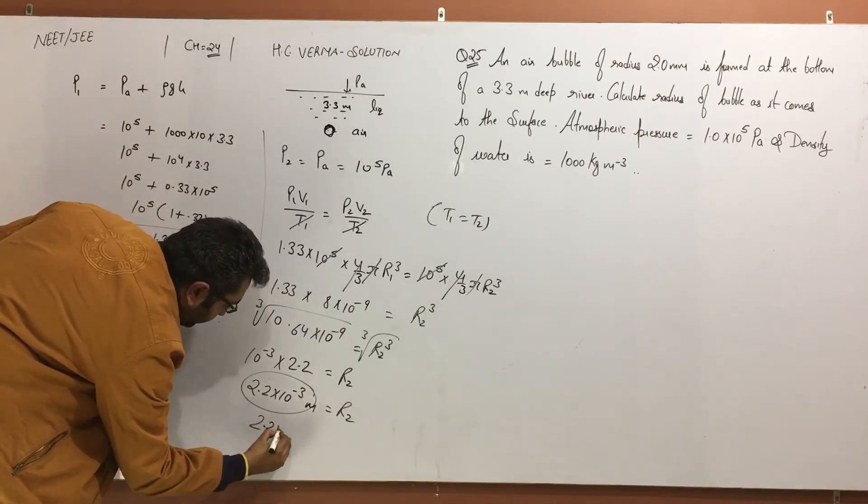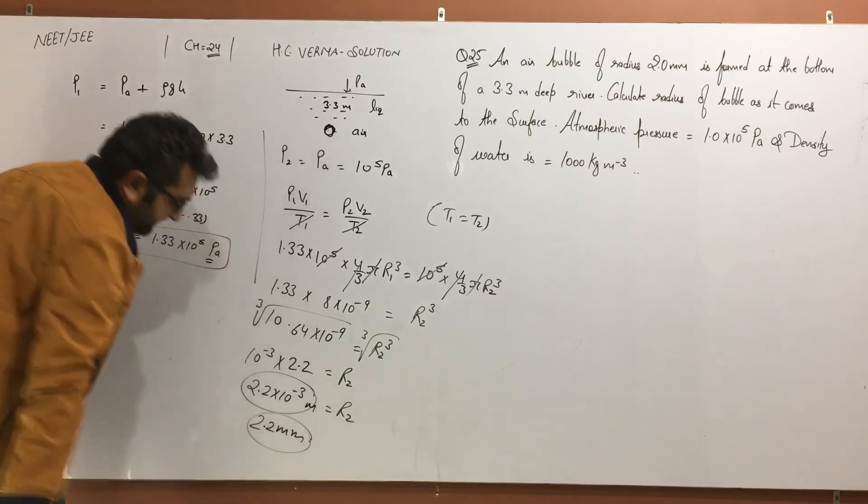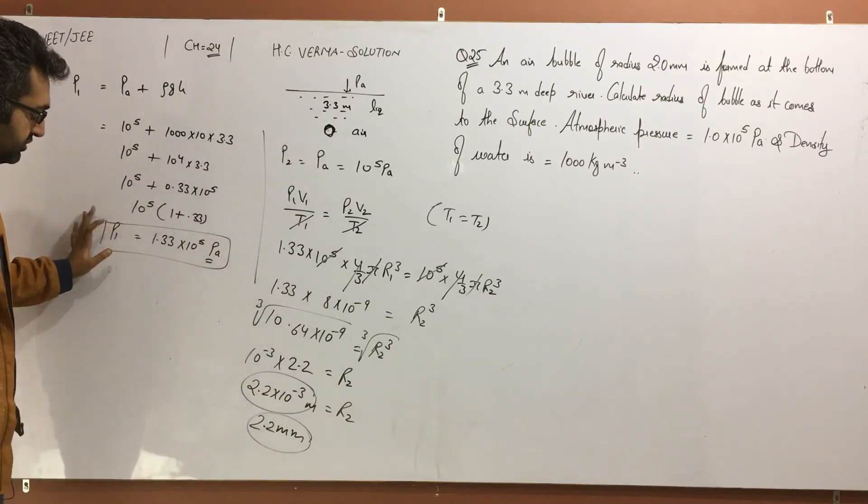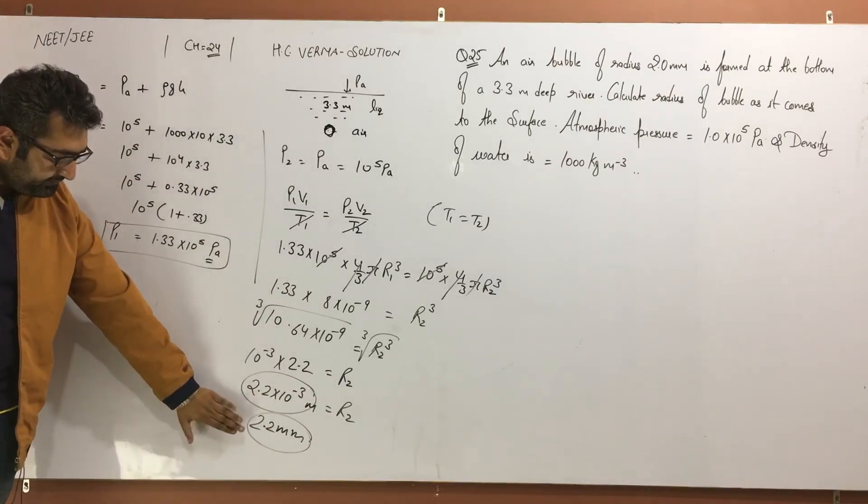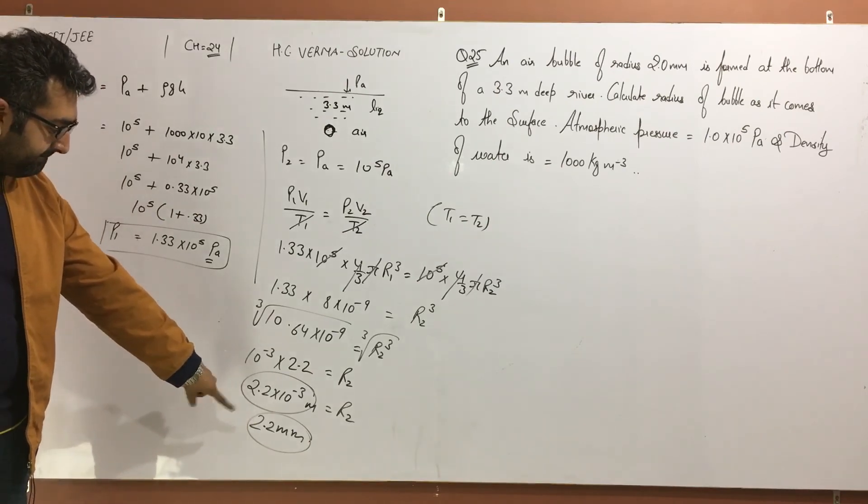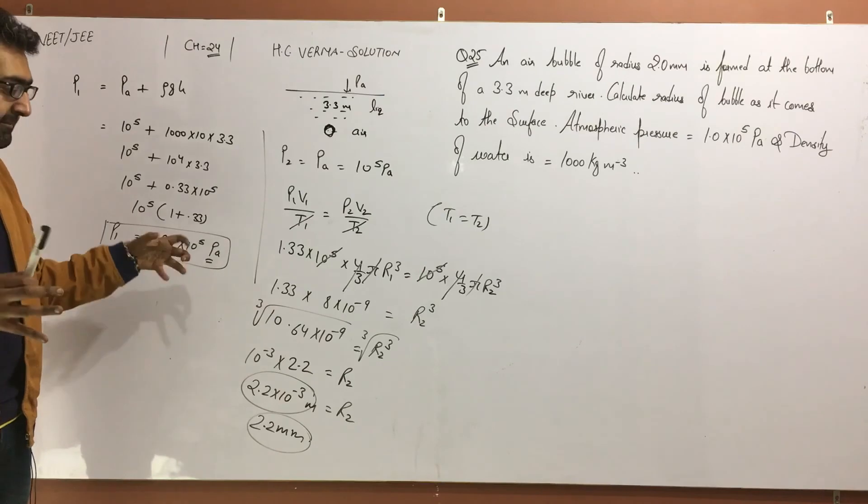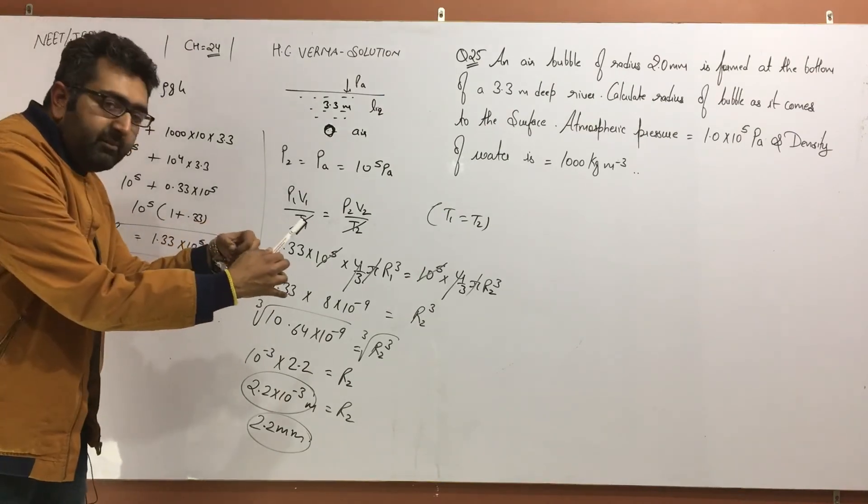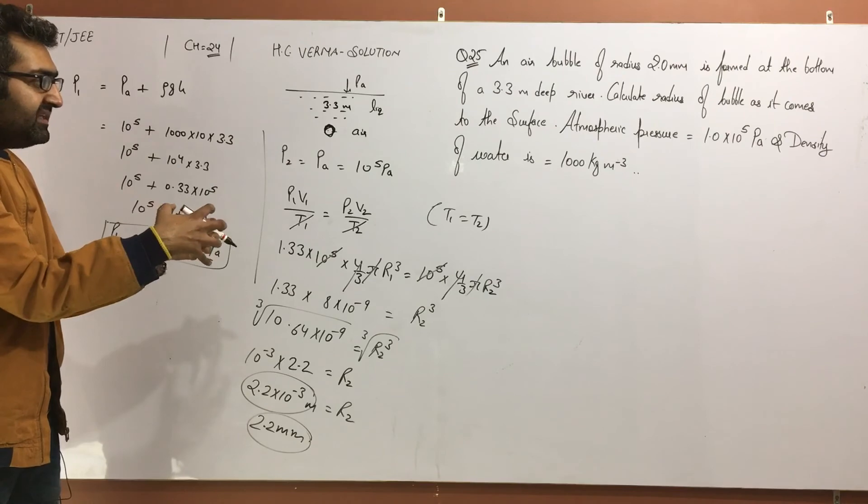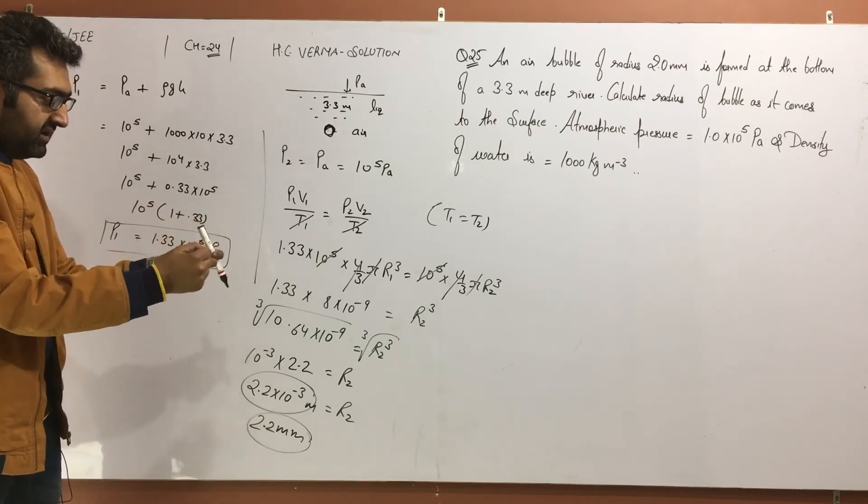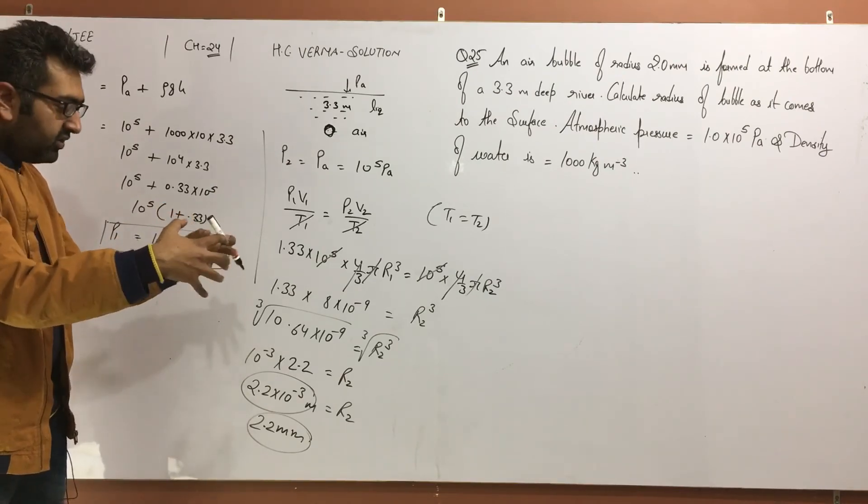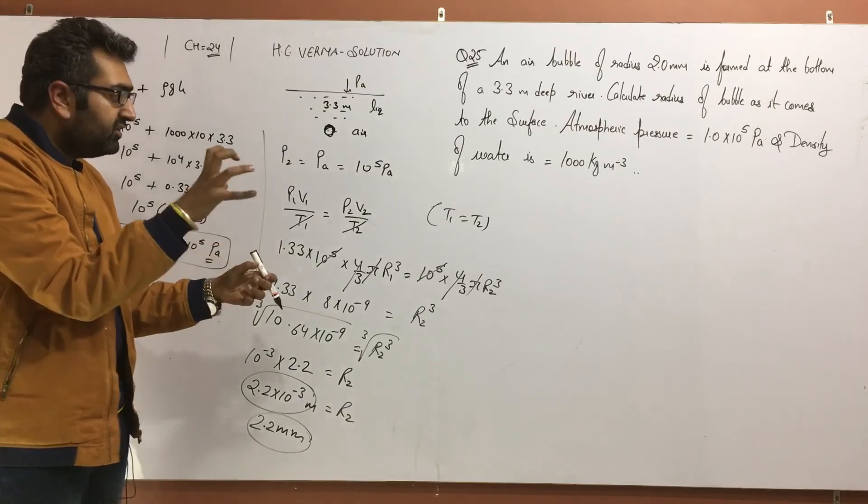I calculated it in meter. It's needed in millimeter, so 2.2 millimeter is the answer. So look carefully at what happened. What happened to the volume? Volume has increased. Earlier, it was compressed due to pressure.